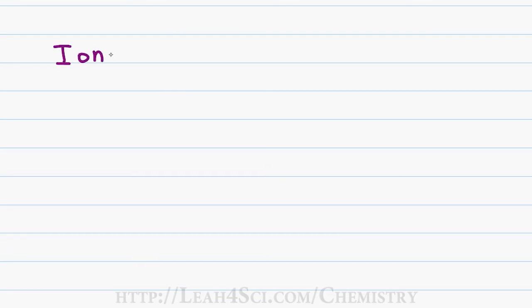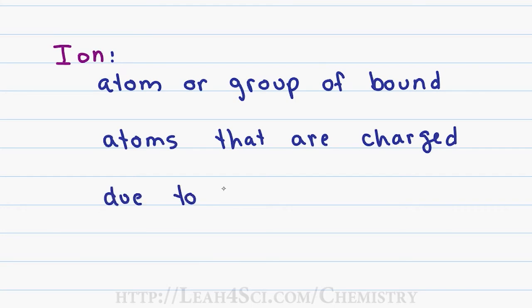Let's start with a long-winded and technical definition. An ion is an atom or group of bound atoms that are charged due to the gain or loss of electrons. Now this is something you might want to put on your test paper, but between you and me, let's focus on something simple. An ion is simply something that is charged.